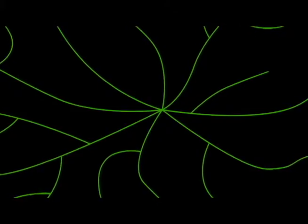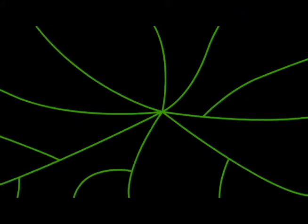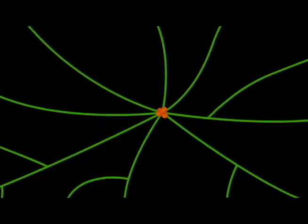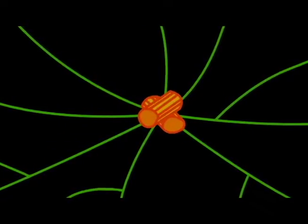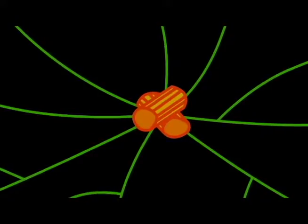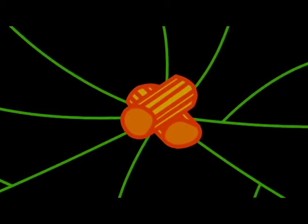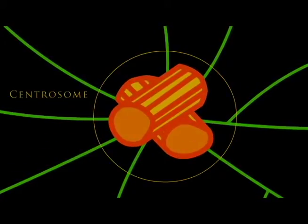Microtubules create structure and stability for the cell, as well as networks of transportation for motor proteins to transfer material across the cell. So if these structures are rigid, why do they not break when the cell moves? The answer lies in an area called the centrosome.